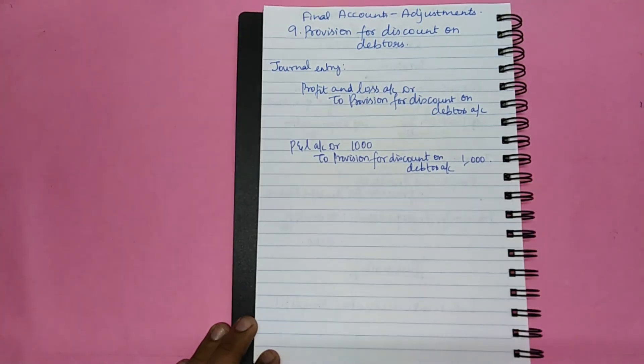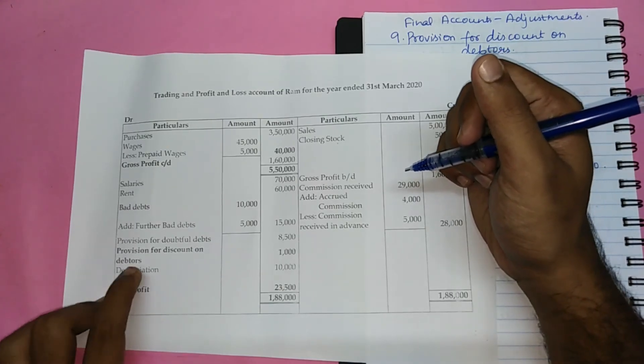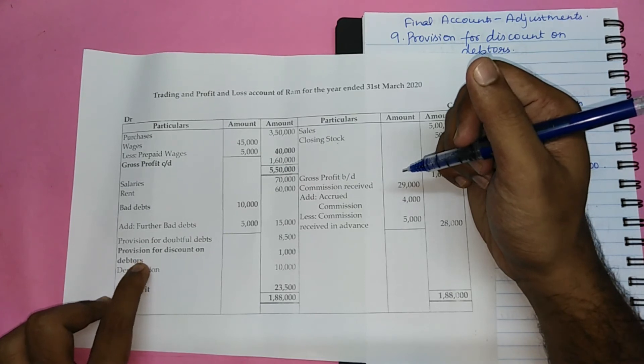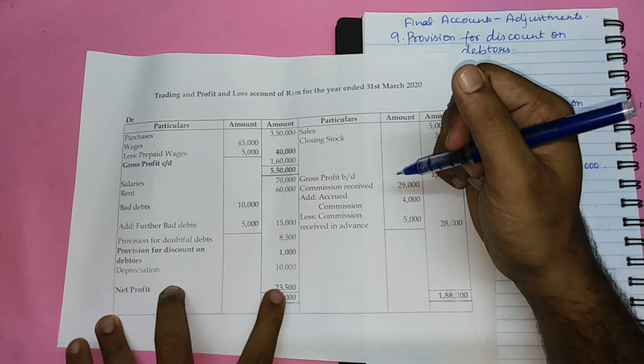Now let us look into the impact of the same in the Profit and Loss account and balance sheet. So this is the Profit and Loss account. Here you can see we are debiting provision for discount on debtors Rs.1000. As a result, the net profit comes down by Rs.1000.